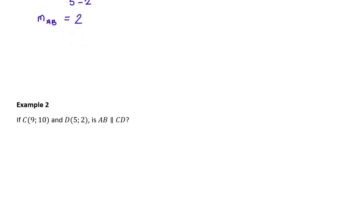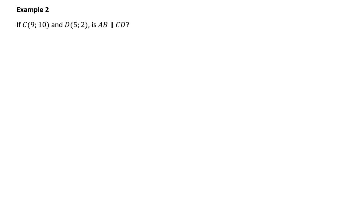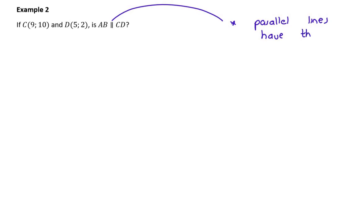Now let's look at the next question. If C and D are these two points, is line AB parallel to line CD? The first important note we need to make here is that parallel lines have the same gradient — really important concept, something we should know from Grade 9.